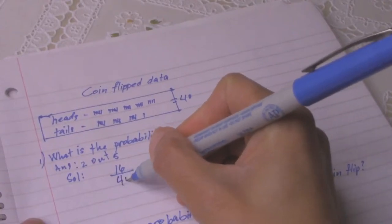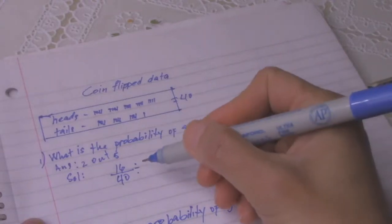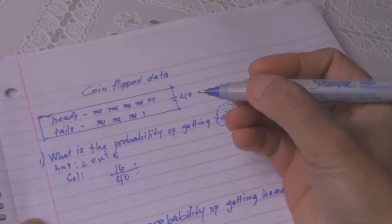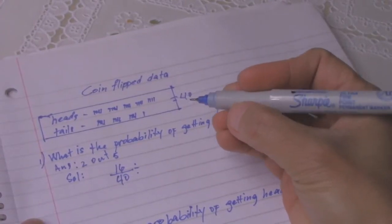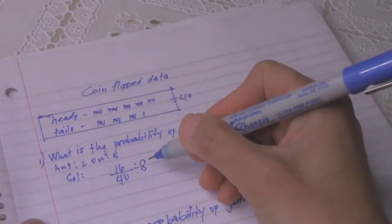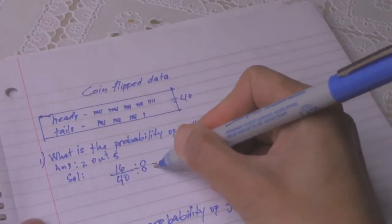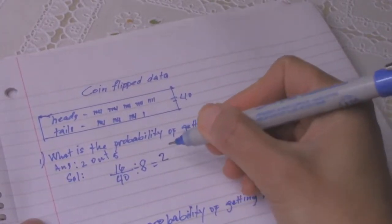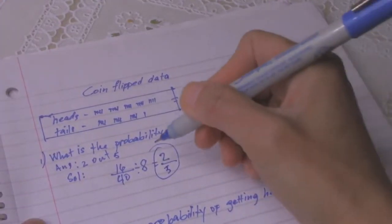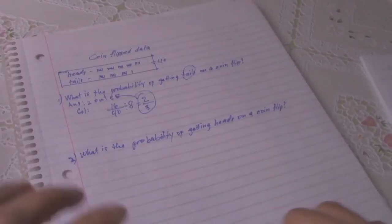And then you find a number that can divide 16 and 40 to find the lowest value. So we can use 8. So 16 divided by 8 equals 2, and 40 divided by 8 equals 5. So that's how you get the answer, 2 out of 5.